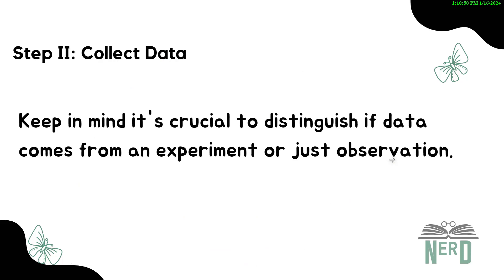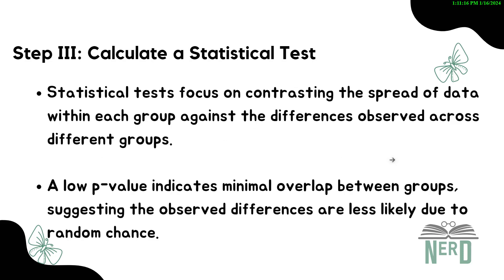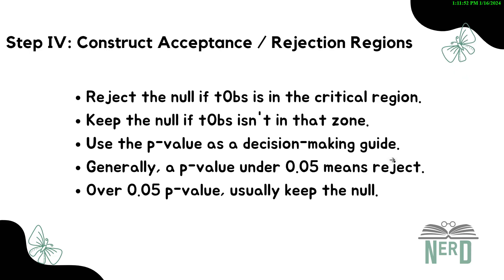Step two is to collect your data — you need evidence to support your statement. Remember, how you gather this information really matters: are you setting up an experiment or just observing what's happening? Each method has its own way of collecting and interpreting data, which we'll discuss in our next session. Step three is to calculate a statistical test — here you work with the numbers to see if there's any noticeable difference between groups. Think of it as looking for patterns or unusual things that stand out. If your data shows clear differences that aren't just by chance, your detective instincts are on point.